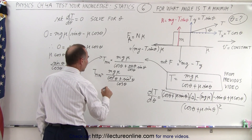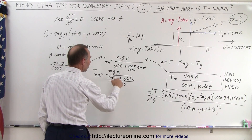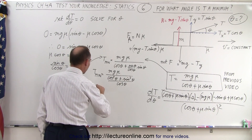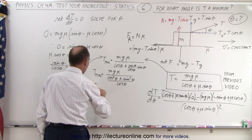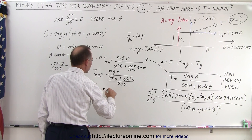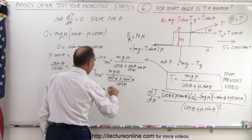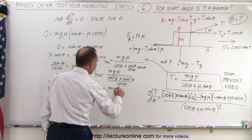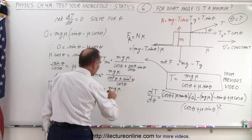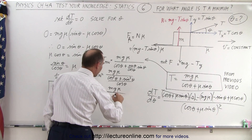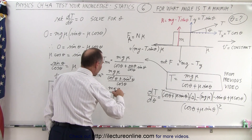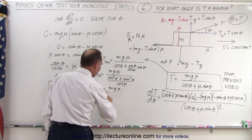The expression cosine squared of theta plus sine squared of theta equals one by the Pythagorean identity. So that simplifies to one, meaning T_min is going to be equal to mg·mu divided by 1 over the cosine of theta.